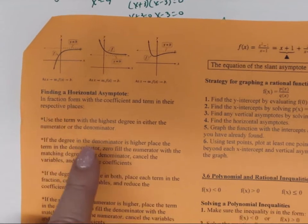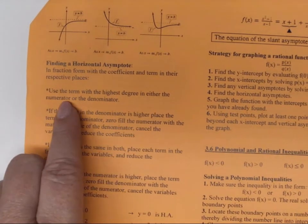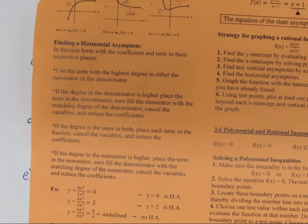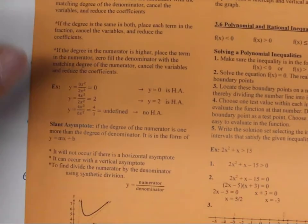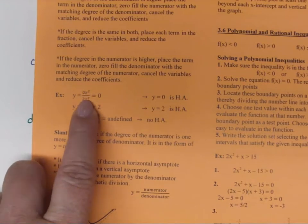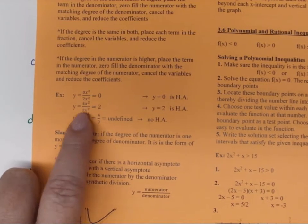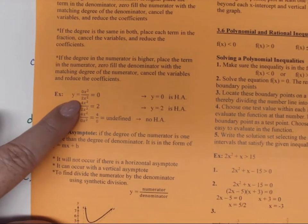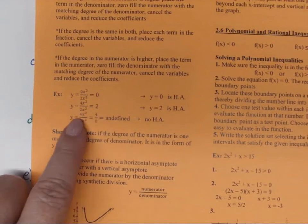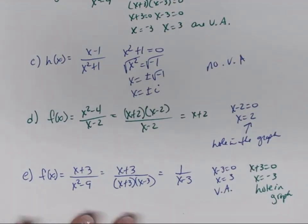To find horizontal asymptotes, we'll look at the degrees of the numerator and denominator. We match the highest degree from the numerator and denominator, use the leading coefficients, and cancel. If the degree in the denominator is higher, the numerator coefficient becomes 0, giving y = 0. If the degrees are equal, divide the leading coefficients. If the numerator degree is higher, the result is undefined — no horizontal asymptote.